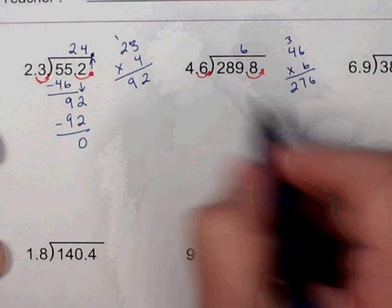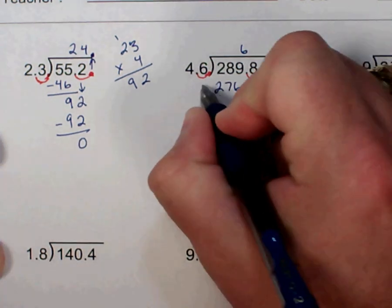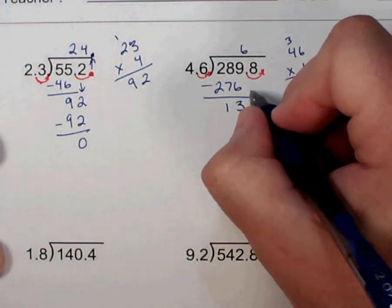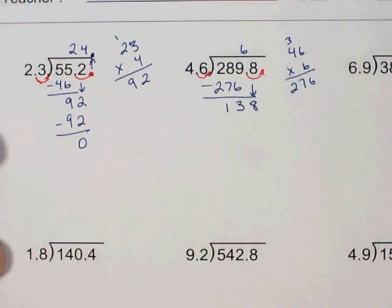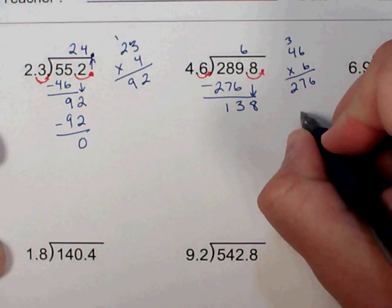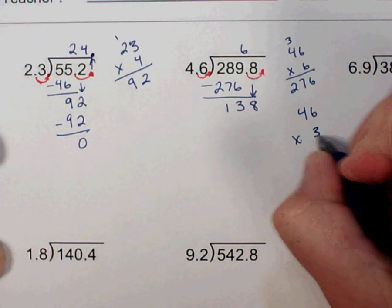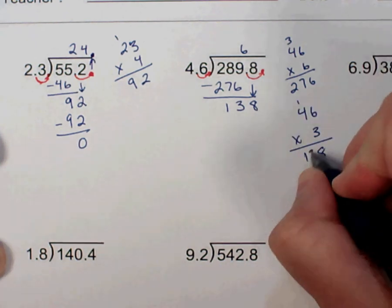6 times 46 I've just calculated is 276. Complete my subtraction. Then I pull down my 8. How many times does 46 go into 138? I'm thinking it's going to be 3, but I'm going to do the multiplication off to the side first, just to be sure. And that works.